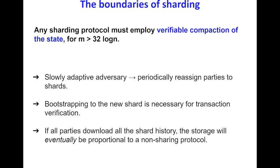The second result states that any sharding protocol must employ verifiable compaction of state. This is due to the assumption that we can tolerate a slowly adaptive adversary. Verifiable compaction means that at the end of an epoch, we can compress the state so that parties bootstrapping onto this shard later do not need to download the whole shard history. The simplest approach is checkpoints — at the end of the epoch, we publish a block containing the UTXO pool at that point, so new parties only need the last block and not the full shard history. Other techniques include cryptographic accumulators, zero-knowledge proofs, and non-interactive proofs of work.